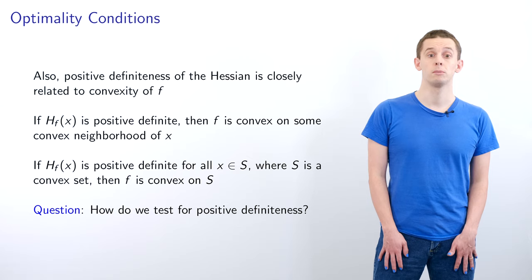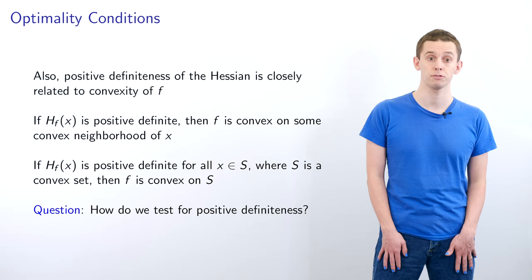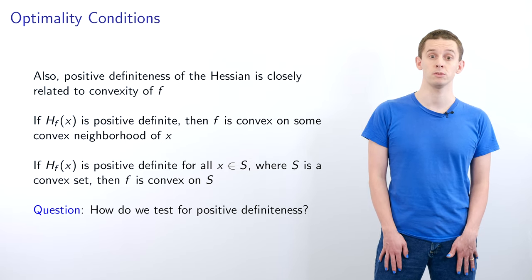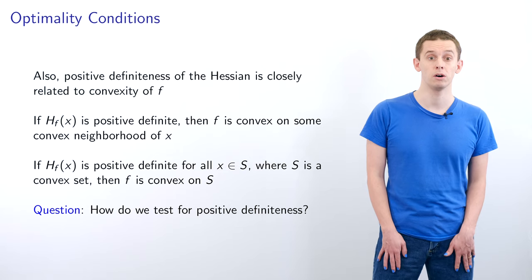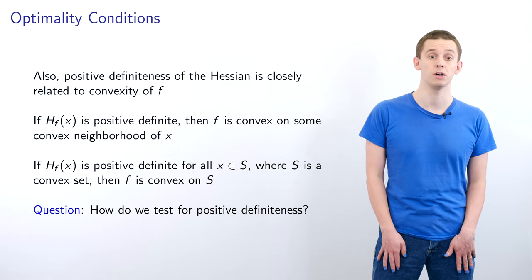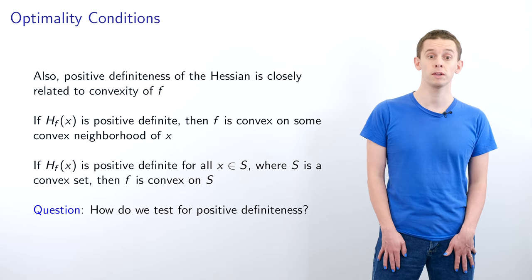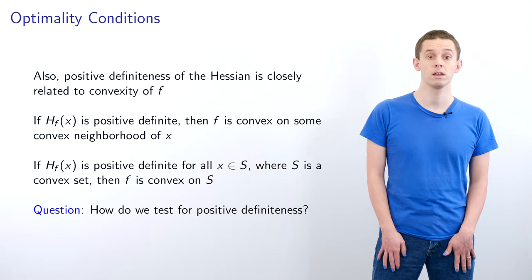Positive definiteness of the Hessian is closely related to the convexity of f. If Hf(x) is positive definite, then f is convex on some convex neighbourhood of x. And if Hf is positive definite for all x in S, where S is a convex set, then f is convex on S.